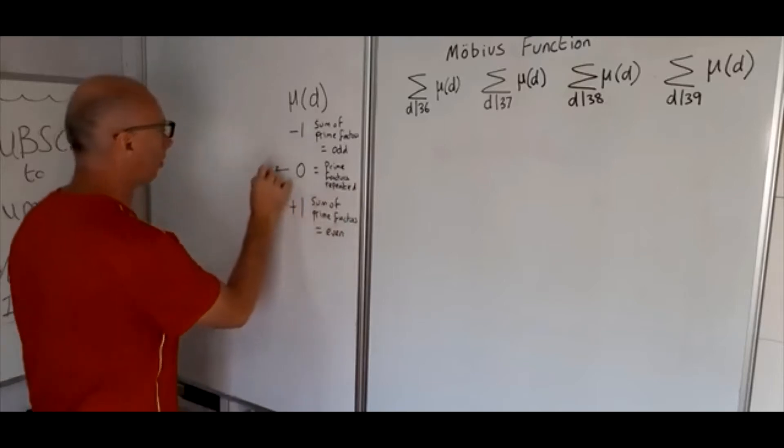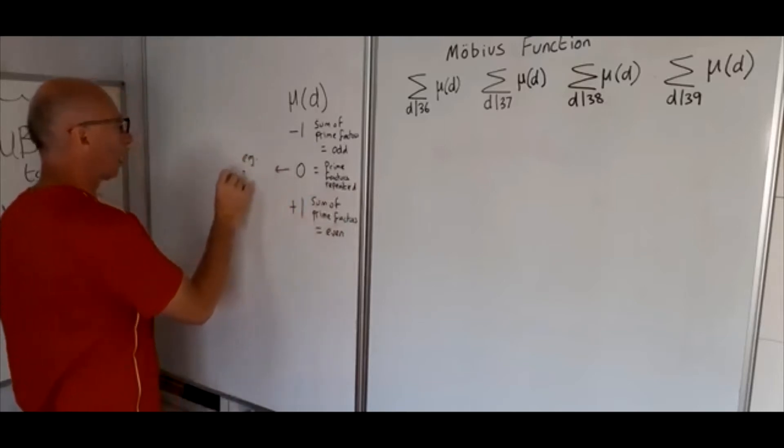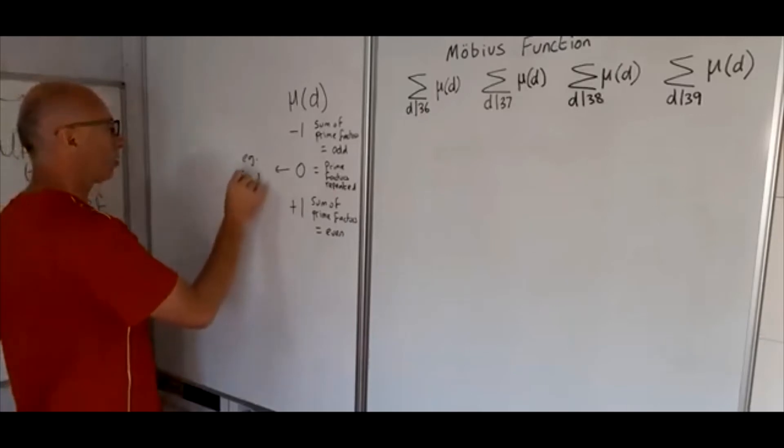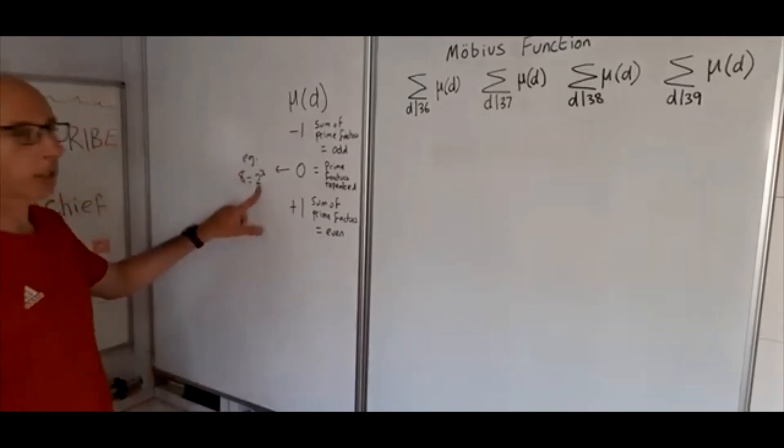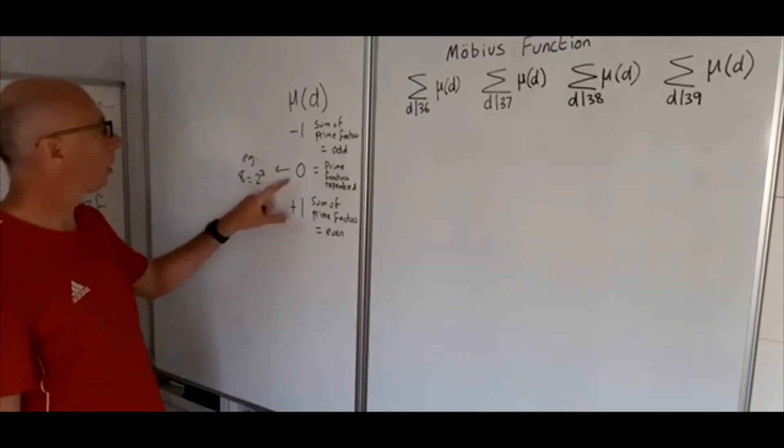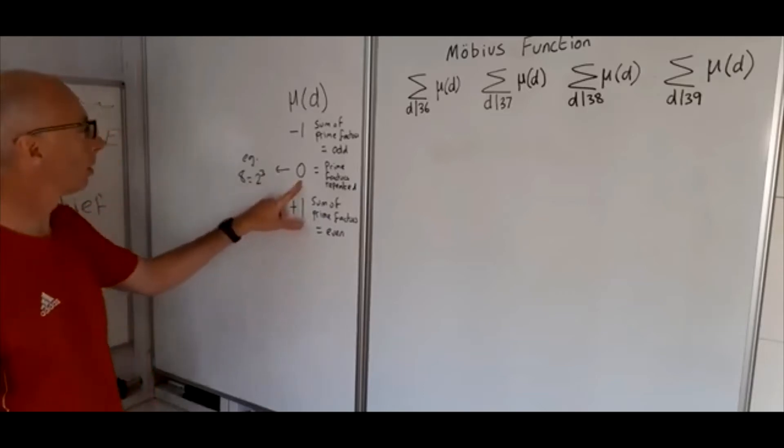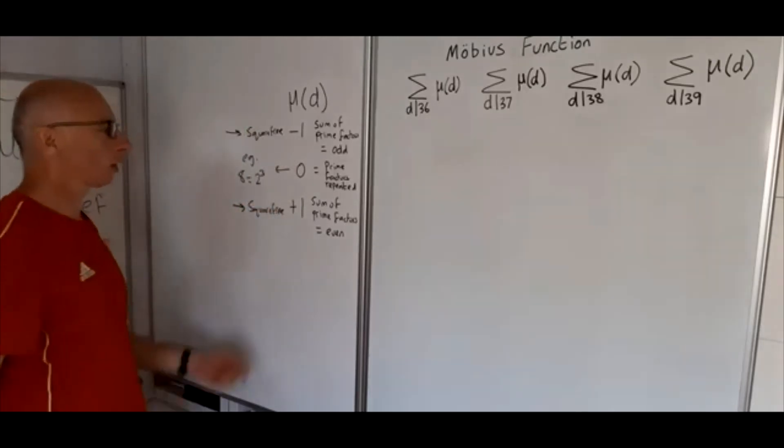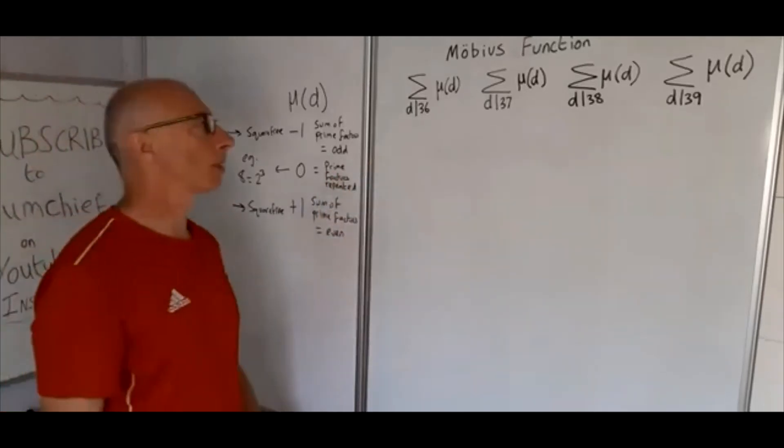So along here I'll put for example eight, prime factors of eight are two cubed. Obviously the two is repeated more than once so it takes the value zero. And then what you also have is that this one and this one are both what's called square free. Okay, now that's a quick refresher. Now let's go on to the main question here.